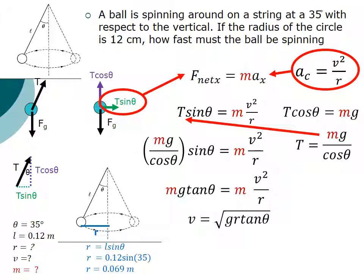When I do all that, I get the following: v equals the square root of gravitational field strength g, times radius r, times the tangent of the angle. Plug in numbers, and I get my final answer of 0.687 meters per second.